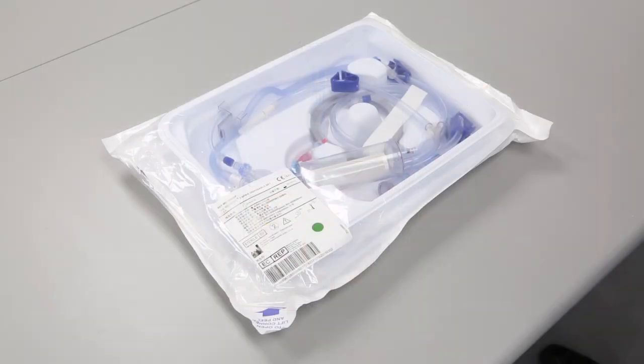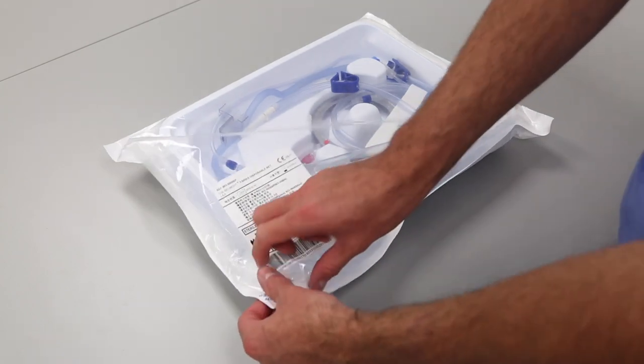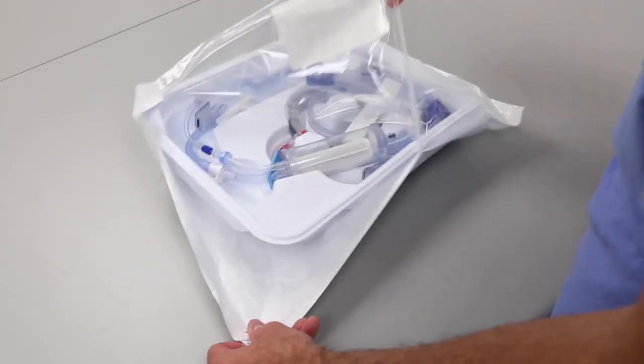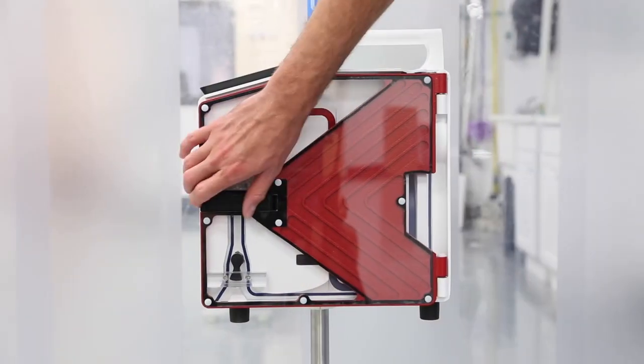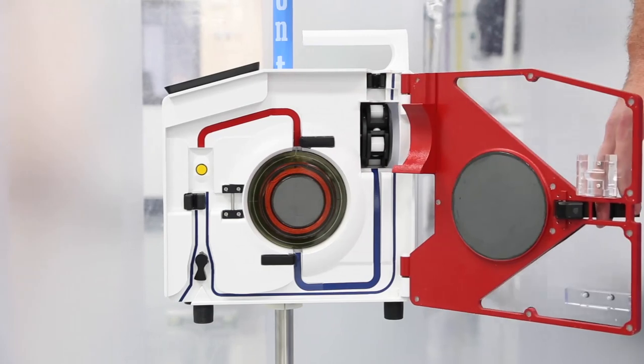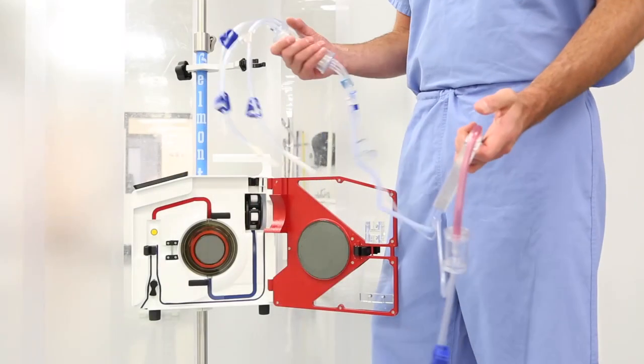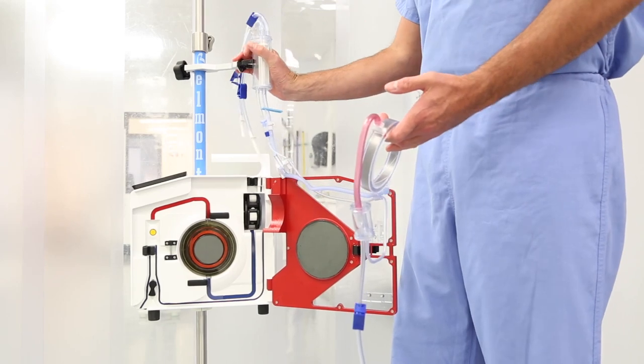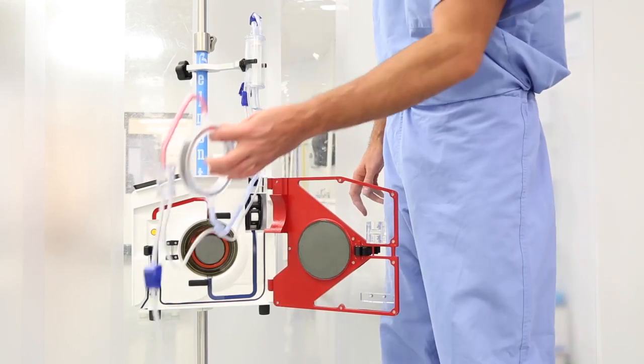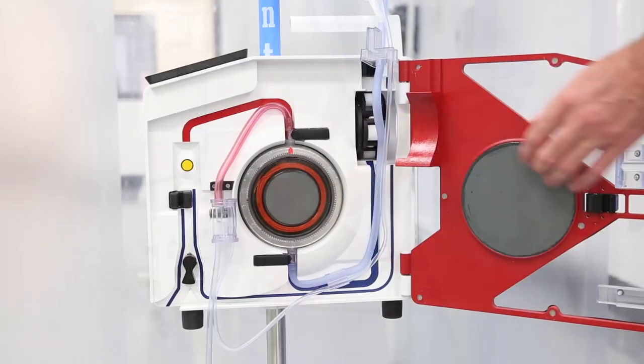The single patient use disposable comes preassembled in a sterile container and is color coded for easy installation. Begin by opening the disposable package and tightening the two luer locks. Open the door of the unit. Holding the heat exchanger in your left hand and reservoir chamber in your right, snap the reservoir chamber into the holder. Insert the heat exchanger with the red arrow pointing up.